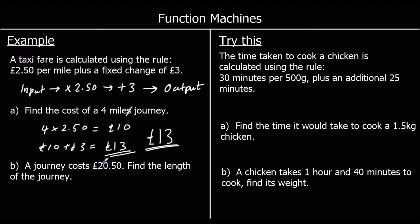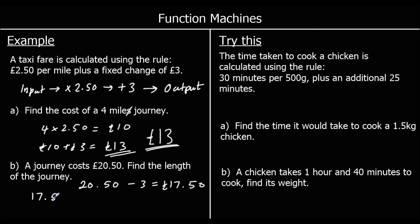A journey costs £20.50 — find the length of the journey. This is like saying the output is £20.50. Let's take off the £3 fixed charge, so that would be £17.50. And then the opposite of timesing by 2.5 is dividing by 2.5. How many £2.50s make £17.50? That is 7. So it's 7 miles.